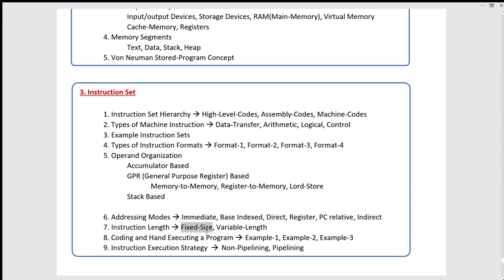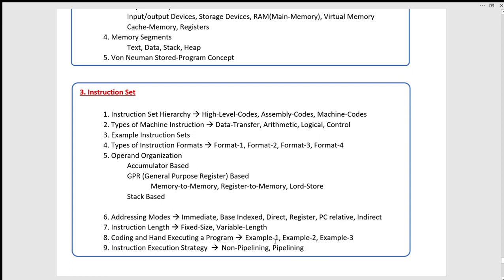You can use fixed size instructions or variable length instructions. You can use the program to keep high-level code — you can use the machine code and execute the computer. This is called coding and hand execution. If you need a program, you can use the machine code, and assign them step by step. The execution strategy is to use the pipeline.